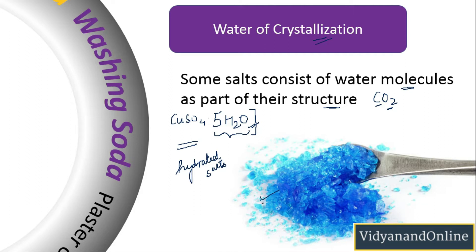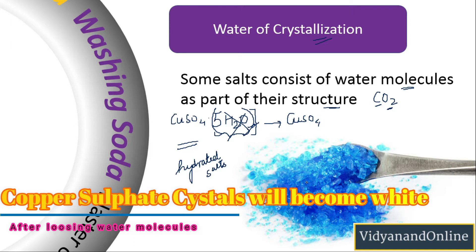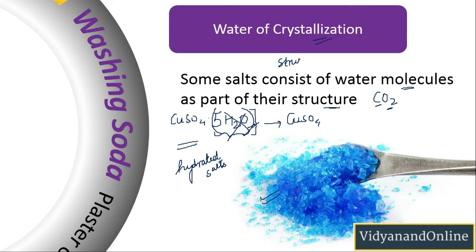Now, the color of copper sulfate crystals is blue because of the presence of these five molecules of water of crystallization. If we heat it, the 5 molecules of water of crystallization will be lost, and only copper sulfate will remain. As a result, the blue color of the copper sulfate crystal will also be lost. So, water of crystallization provides both structure and color to the salt — removing the water molecules changes both structure and color.